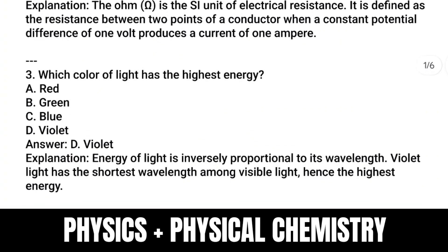Question three: Which color of light has the highest energy? Answer is violet. Why? Energy of light is inversely proportional to wavelength. Violet light has the shortest wavelength among visible light, hence the highest energy.